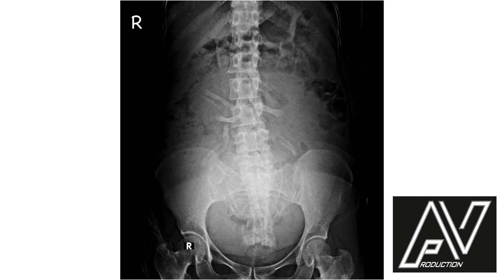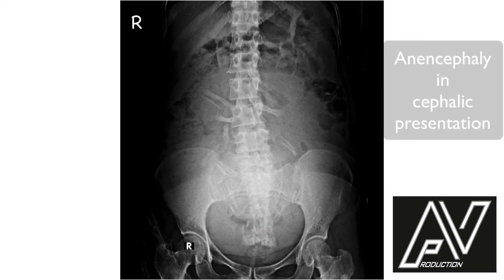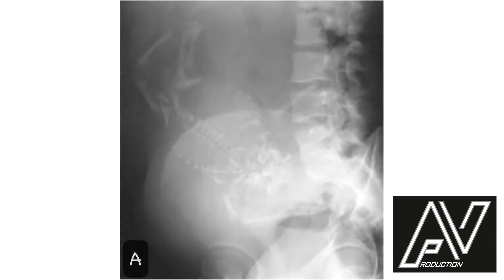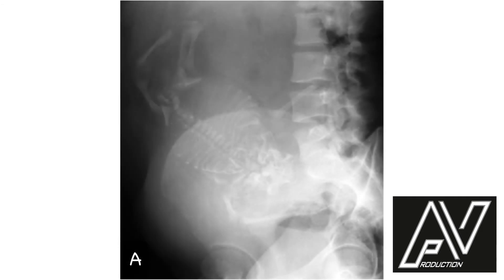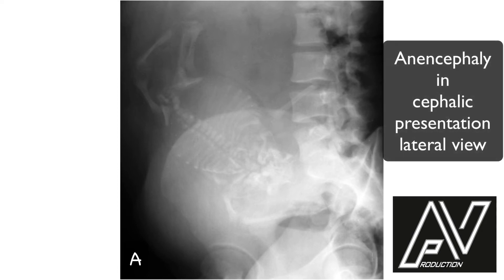This is a plain x-ray of the abdomen and pelvis, AP view, well centralized, well exposed, showing a single fetus in longitudinal lie, flexed attitude. The presentation is cephalic. However, the skull vault is absent and only the base of the skull can be seen. Therefore, by inference, the presenting part is face and my diagnosis is anencephaly in cephalic presentation. This is the lateral plate of the same patient showing a single fetus in longitudinal lie with cephalic presentation and no skull vault. Therefore, the diagnosis is anencephaly in lateral view.